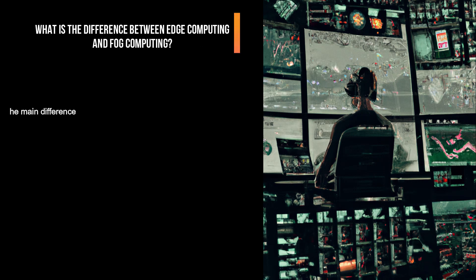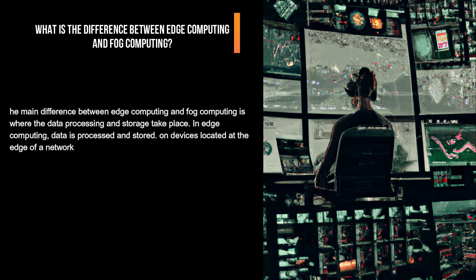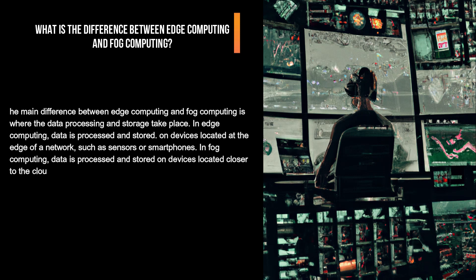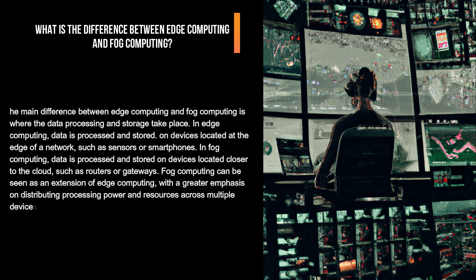What is the difference between edge computing and fog computing? The main difference is where the data processing and storage take place. In edge computing, data is processed and stored on devices located at the edge of a network, such as sensors or smartphones. In fog computing, data is processed and stored on devices located closer to the cloud, such as routers or gateways. Fog computing can be seen as an extension of edge computing, with a greater emphasis on distributing processing power and resources across multiple devices in a network.